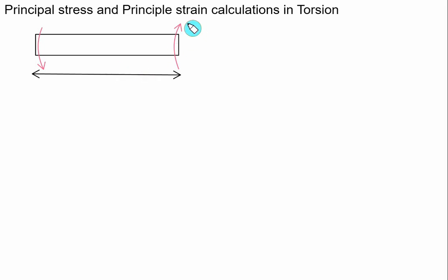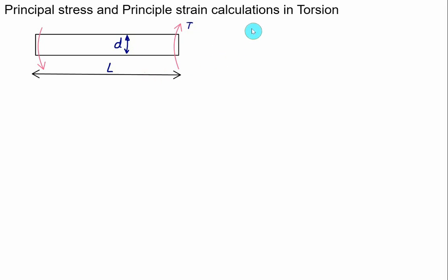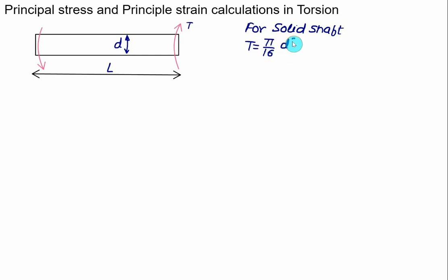Consider a shaft subjected to torque T, with length L and diameter d — assuming it's a solid shaft. If you know the diameter, we can calculate the shear stress. For a solid shaft under pure torsion, the torque is given as T = (π/16) × d³ × τ_max.